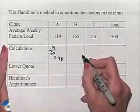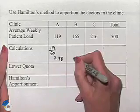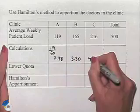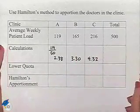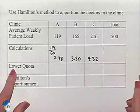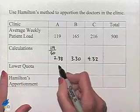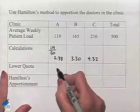Doing the same thing for each of the populations would give us 3.30 for clinic B and 4.32 for clinic C. We're now going to look at the lower quota for each. That would mean truncating down to the whole number part of the number.